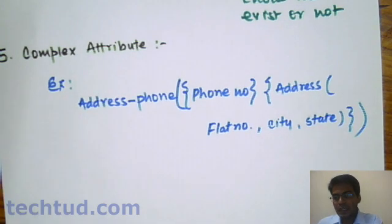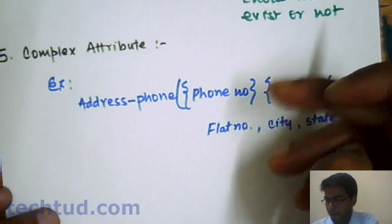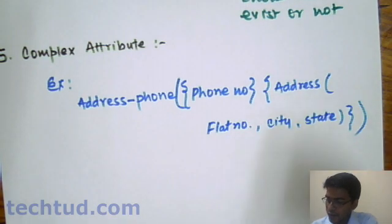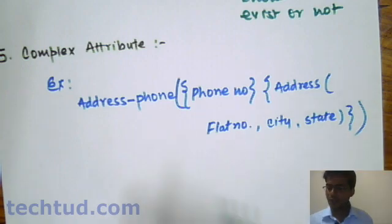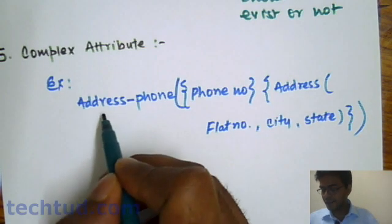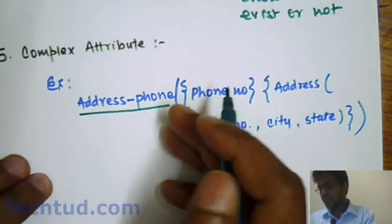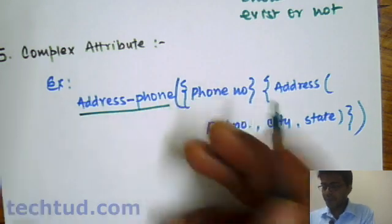Complex attribute is what we do when we nest some multivalued attribute and some composite attributes into a single attribute. For example, if we consider this example, we have address-phone. This is a complex attribute in which we have combined phone number and address.